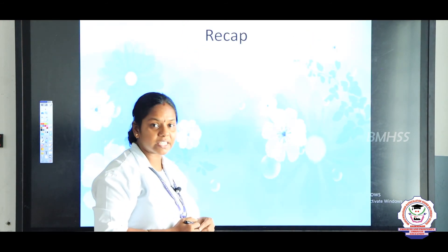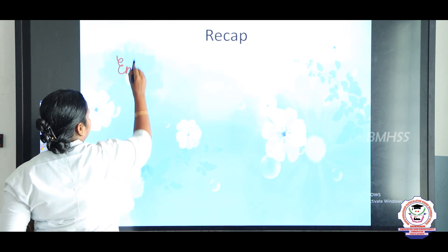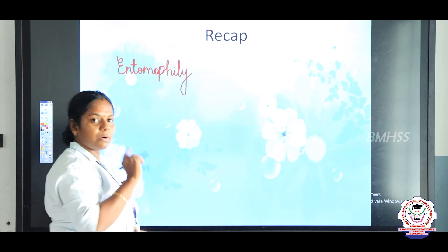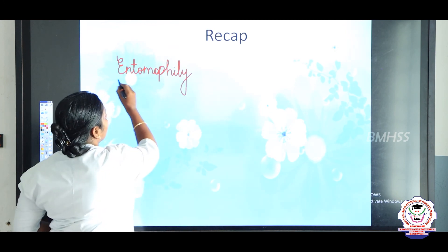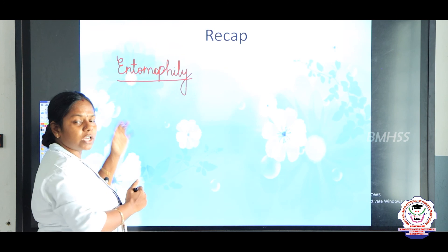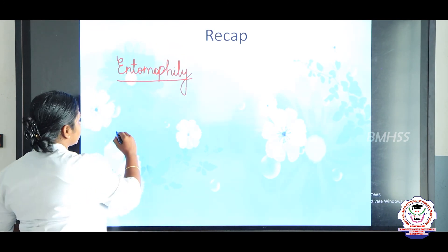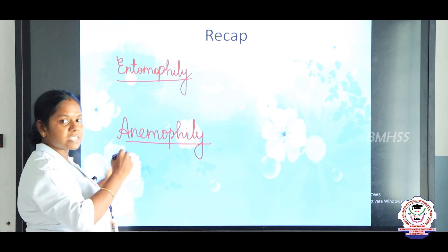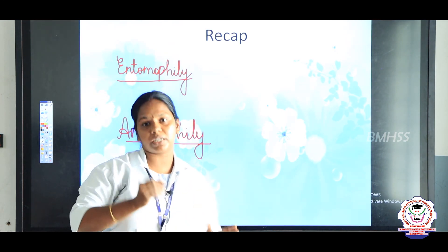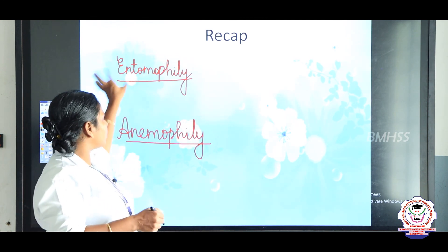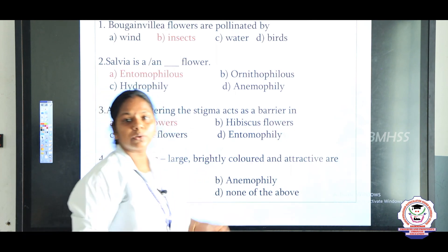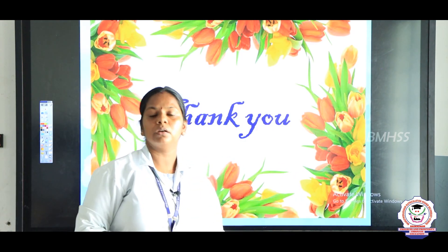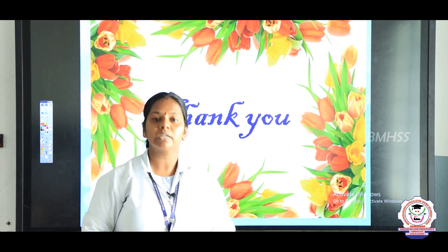So children, in this session we discussed about biotic and abiotic agents of pollination. We discussed entomophily — pollination by insects — and its characteristic features. Next we studied anemophily — pollination by wind. After studying this chapter, you should be able to compare and contrast both. An assessment related to this topic is given in the description. Write the characteristics of entomophilous and anemophilous flowers in your notebook. Thank you, children. Have a nice day.